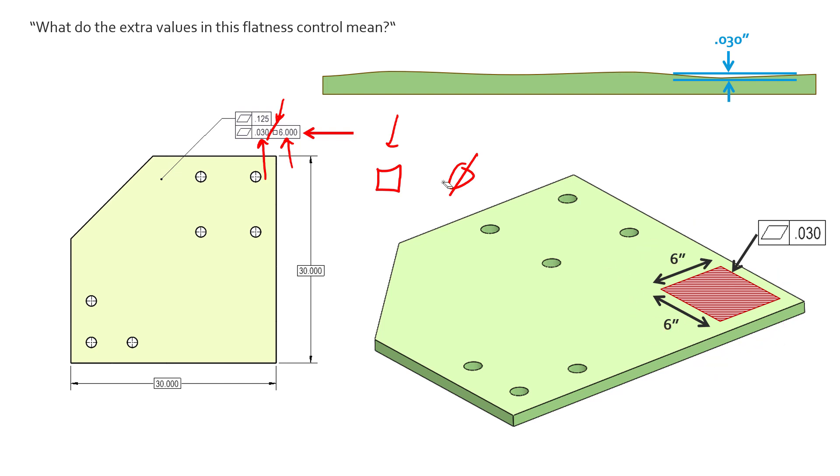Picture a square six inches by six inches, and now we have to control flatness to 30 thousandths in that square six by six. You can see here being represented by this red hash.